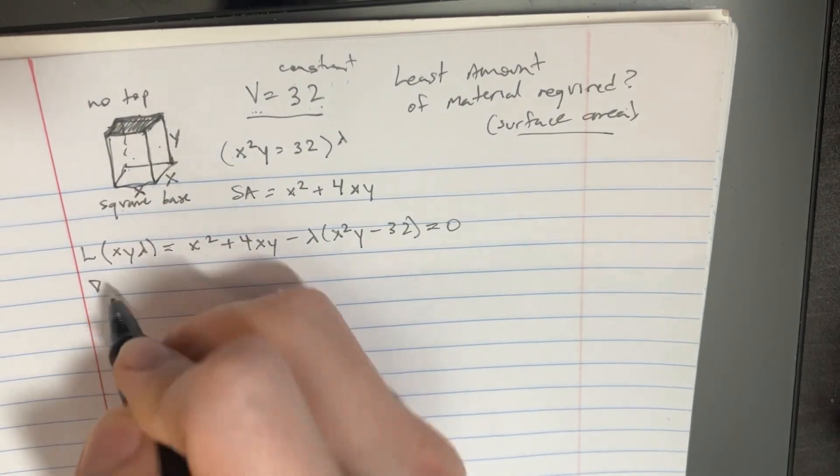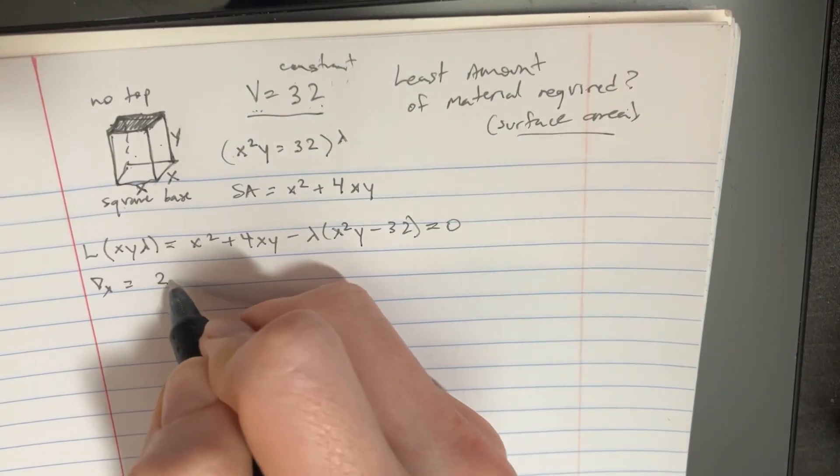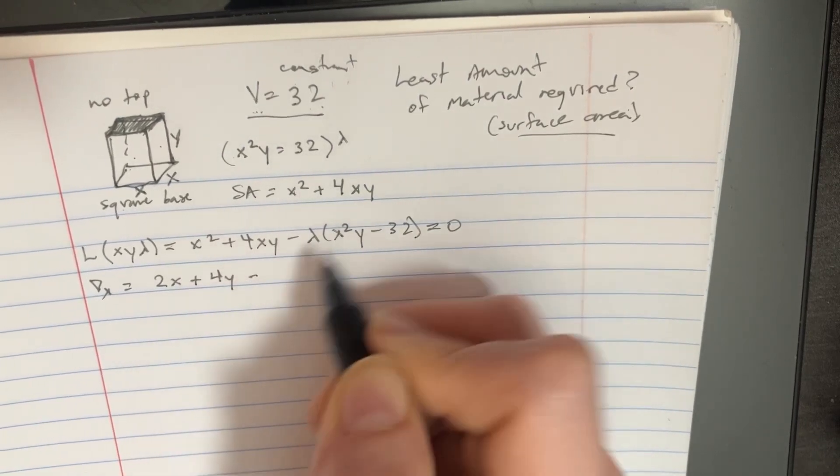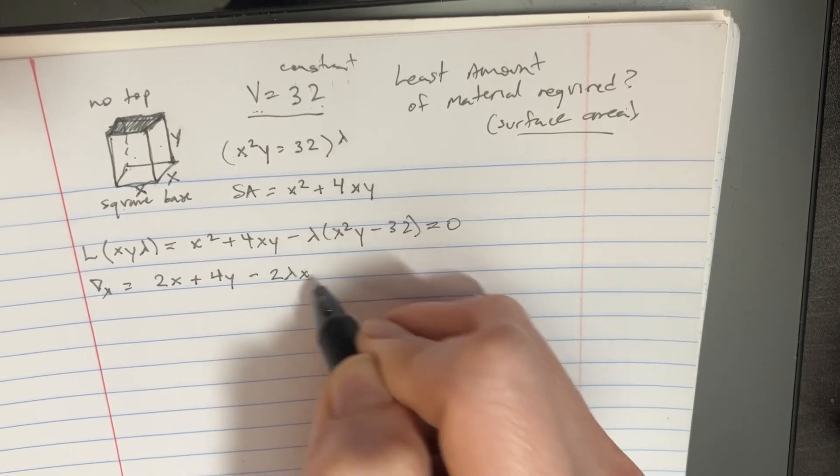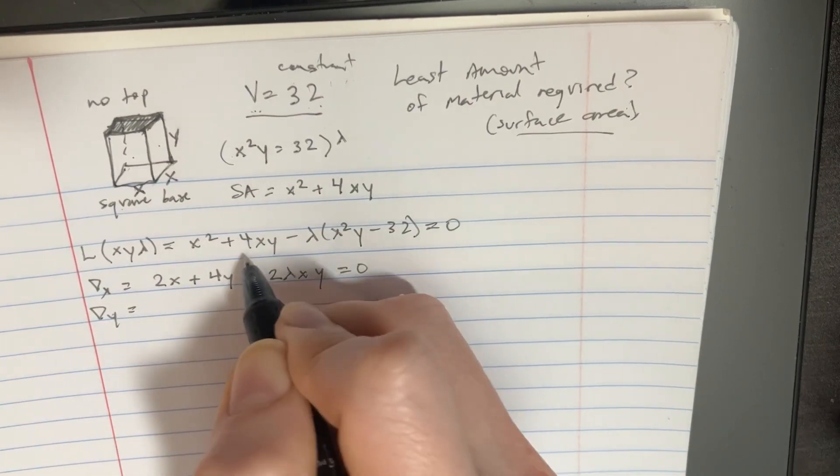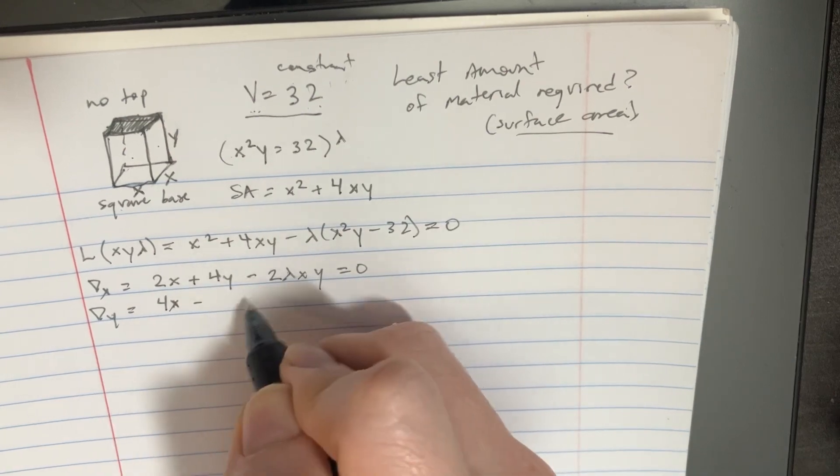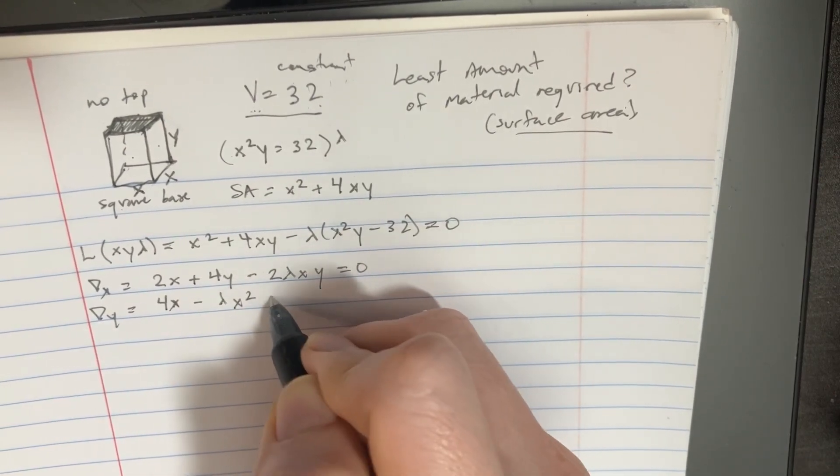Once we take our derivative in terms of x, we'll have 2x plus 4y minus 2 lambda xy equals zero. This is going to be for y then, and we'll have 4x minus lambda x squared equals zero.